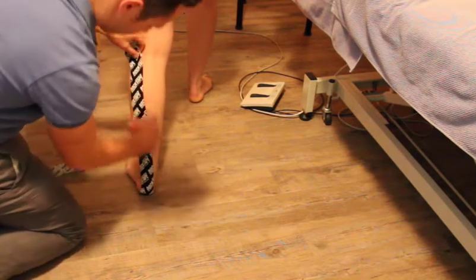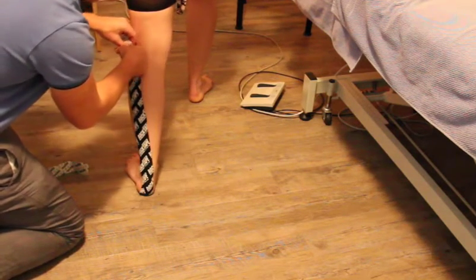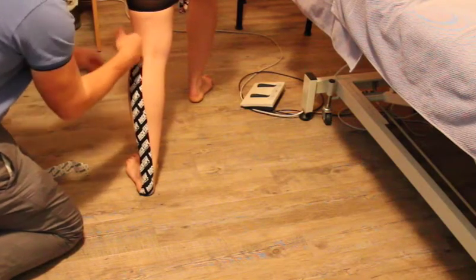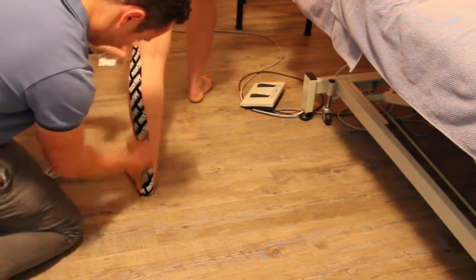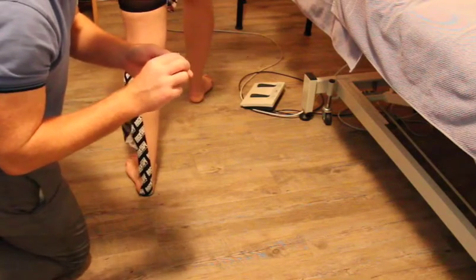Running it up through the outside, the outer belly of this gastrocnemius and right over the Achilles and then just finishing off above the knee with no stretch there. And we grab our other identical piece there.